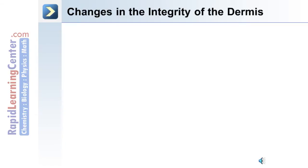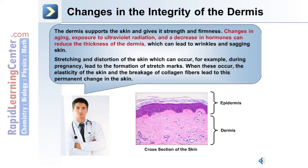The integrity of the dermis can change. The dermis supports the skin and gives it strength and firmness. Changes in aging, exposure to ultraviolet radiation from the sun, and decreases in hormone levels can reduce the thickness of the dermis, leading to wrinkles and sagging skin. The dermis can also be stretched and distorted — for example, during pregnancy — leading to the formation of stretch marks. The loss of skin elasticity and the breakage of collagen fibers leads to a permanent change in the skin.